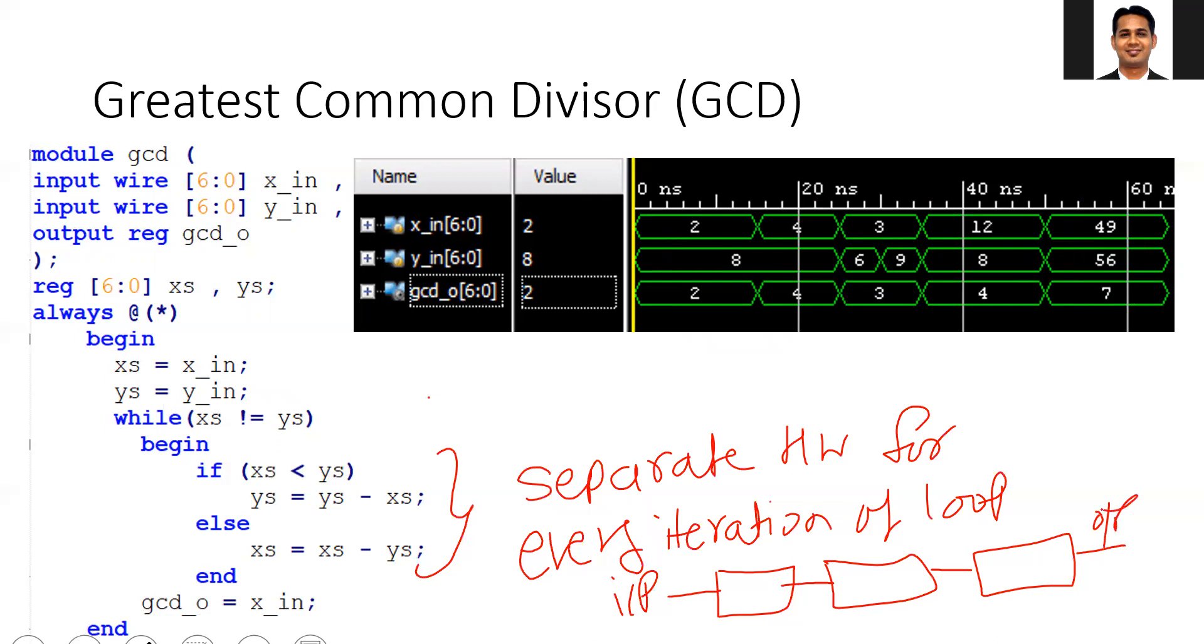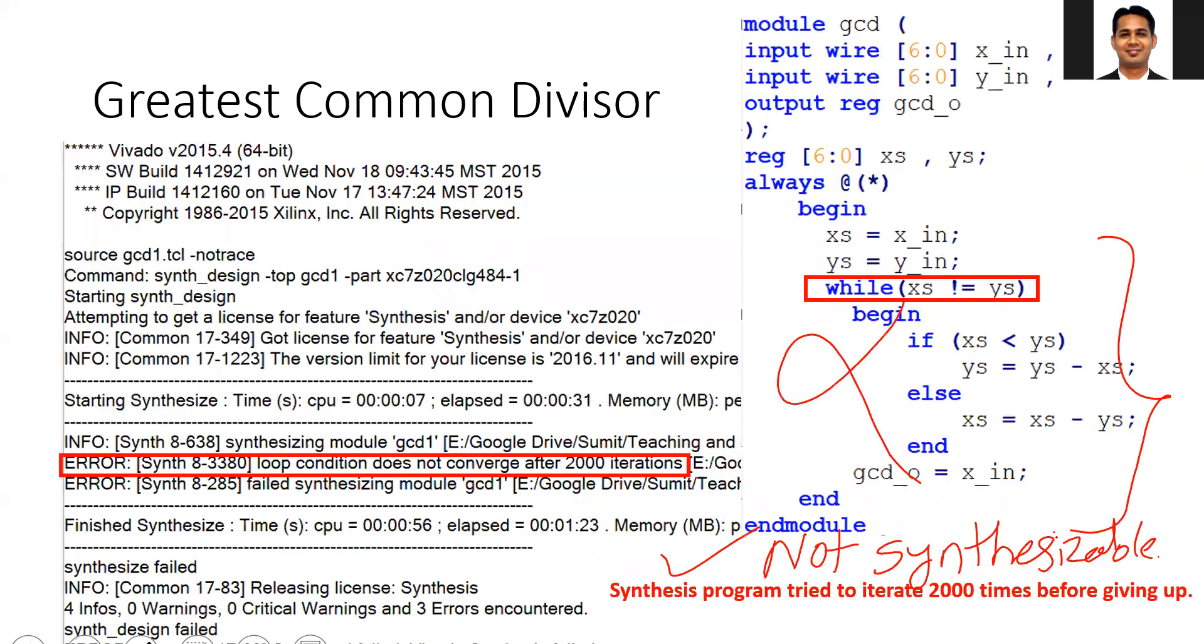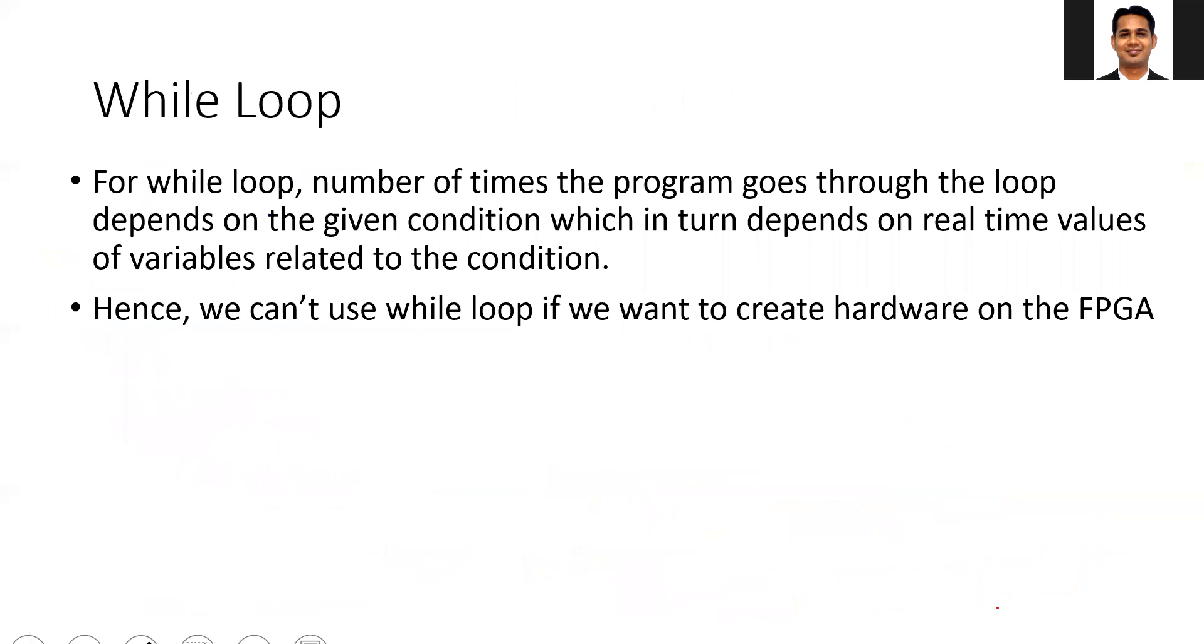The problem here is that since the while loop, we don't know in advance how many iterations will be possible in this while loop. The tool doesn't know how many copies of hardware to be created, and that's why the tool tries to iterate over a certain number of times which are there in the tool settings and then it gives up.